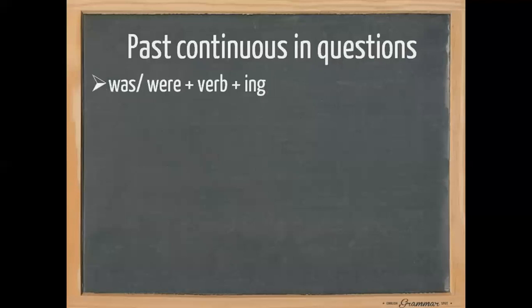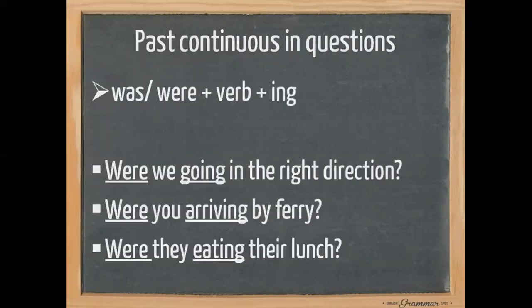Next part: past continuous questions. With questions we use 'was' or 'were', then we need the subject, then the verb base form plus '-ing'. First: were we going in the right direction? 'Were' in the beginning, then 'we', then 'go' base form plus '-ing': going, then the complement 'in the right direction'. Next: were you arriving by ferry? 'Were' plus 'you', then 'arrive' base form plus '-ing': arriving by ferry, then a question mark.